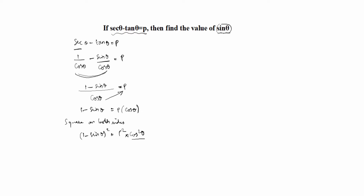How do we write cos squared theta? We already know that sin squared theta plus cos squared theta equals 1. So cos squared theta equals 1 minus sin squared theta. This is the formula, and we have to apply it here.